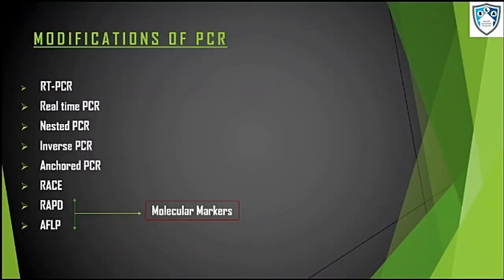What are the modifications of PCR? It's RT-PCR, real-time PCR, nested PCR, inverse PCR, anchored PCR, RACE, and RAPD and AFLP which are also known as molecular markers. RAPD and AFLP will be discussed in a separate lesson which would involve other molecular markers as well.